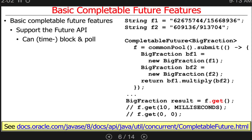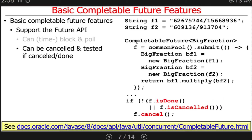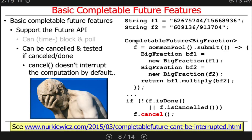We don't hardly ever program like that, by the way, but that's what you could do if you were stuck just using the basic stuff. You can also test to see if a future is done or if it's been canceled, and if it isn't done and it hasn't been canceled, we could attempt to cancel it. For some reason, completable futures by default cannot be interrupted — you can't cancel them. You can call cancel all you want but it doesn't actually have any effect, which is very bizarre. That's actually somewhat different from regular futures. Canceling completable futures takes some extra work.